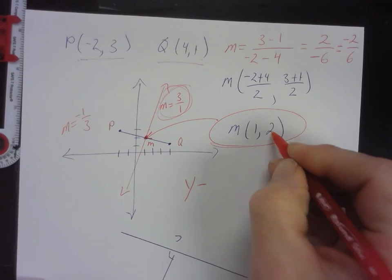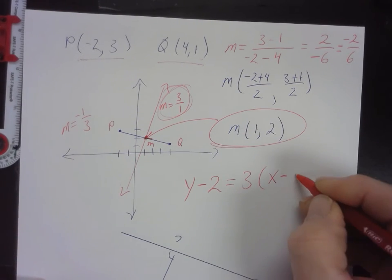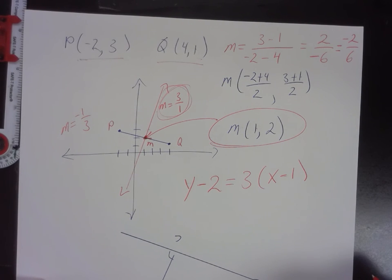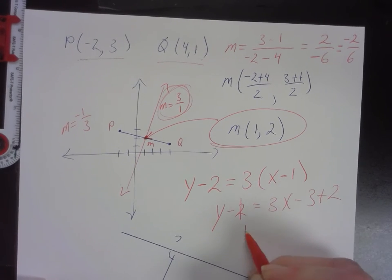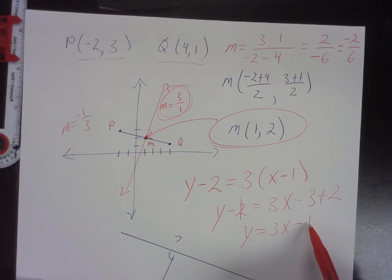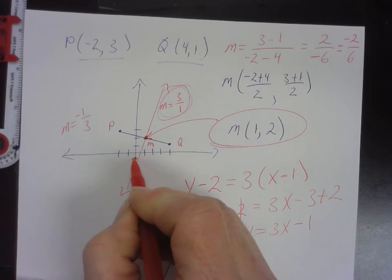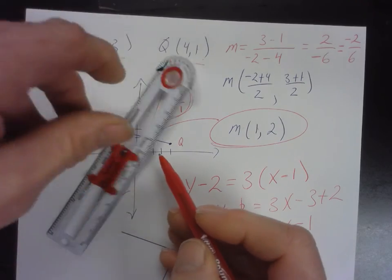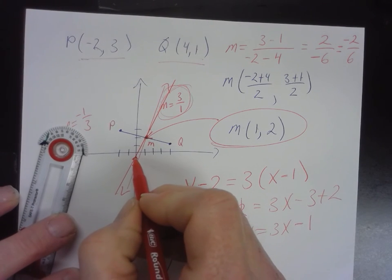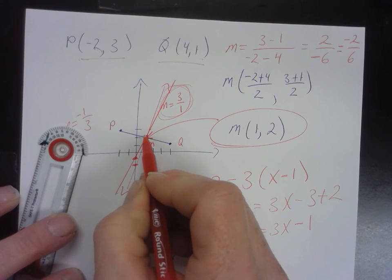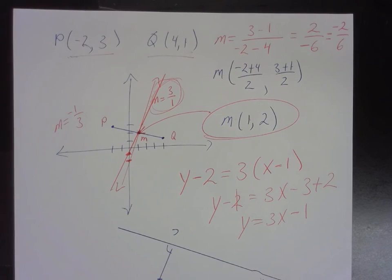We can write the equation. Using point-slope form: y − 2 = 3(x − 1). We don't leave it in point-slope form — we convert to slope-intercept form. Let's see if y-intercept of −1 makes sense on the graph: starting at (1, 2), going up three over one gives us another point, and that looks right. That's a lot of math, but once you understand it, you can do it.